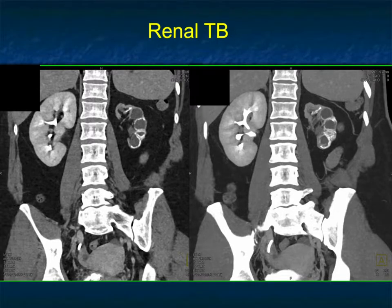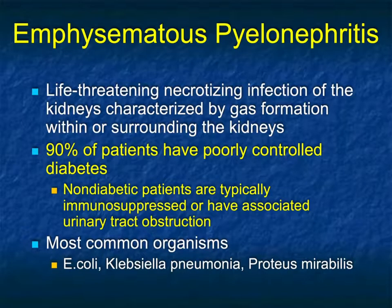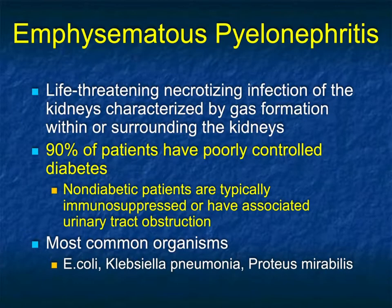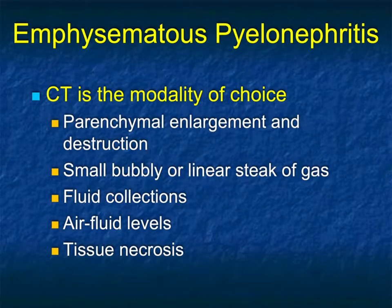TB is uncommon, but it's making a comeback. We see a lot of lung TB and a lot less in the abdomen, but it's something to think about. Another infection is emphysematous pyelonephritis. These are typically patients who are really sick, often nursing home patients — 90% have poorly controlled or uncontrolled diabetes. Organisms include E. coli, Klebsiella, and Proteus. These patients are surgical emergencies, assuming they're surgical candidates at all. CT shows parenchymal enlargement and destruction, areas of air within the kidney, ureter, or perirenal space, fluid collections, air-fluid levels, and tissue necrosis.